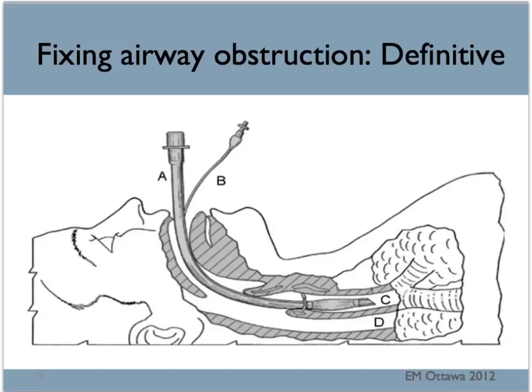There are other extraglottic devices such as the LMA that you might have seen used in the emergency department; however, they do not protect against aspiration. If endotracheal intubation cannot be done due to difficult anatomy, then a cricothyroidotomy is performed to gain access into the trachea through the anterior neck. This is an advanced airway skill and will not be discussed here.